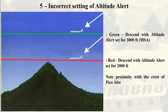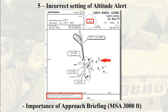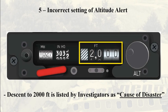In this schematic comparing the descent to 3,000 feet in green with the descent to 2,000 feet in red, we can see that descending to 2,000 feet will place the jet at an altitude much closer to the ridges of Pico Alto. It's important to note that at the time of the accident, the edge of Pico Alto was covered in cloud, which we will detail shortly. This leads again to the importance of the approach briefing and reviewing the MSA of 3,000 feet. Here we can see a replica of the plane's altitude alert set at 2,000 feet. The board of inquiry listed the deliberate descent to 2,000 feet — breaching the MSA and ATC clearance — as a quote cause of the disaster.